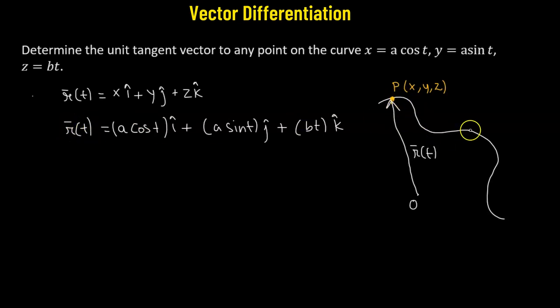Now if we find the derivative of our position vector with respect to time t, this is also going to be the tangent at that particular point to the given curve. So let's find it out. This is the tangent vector. The derivative of a cos(t) times i cap will be -a sin(t) i cap.